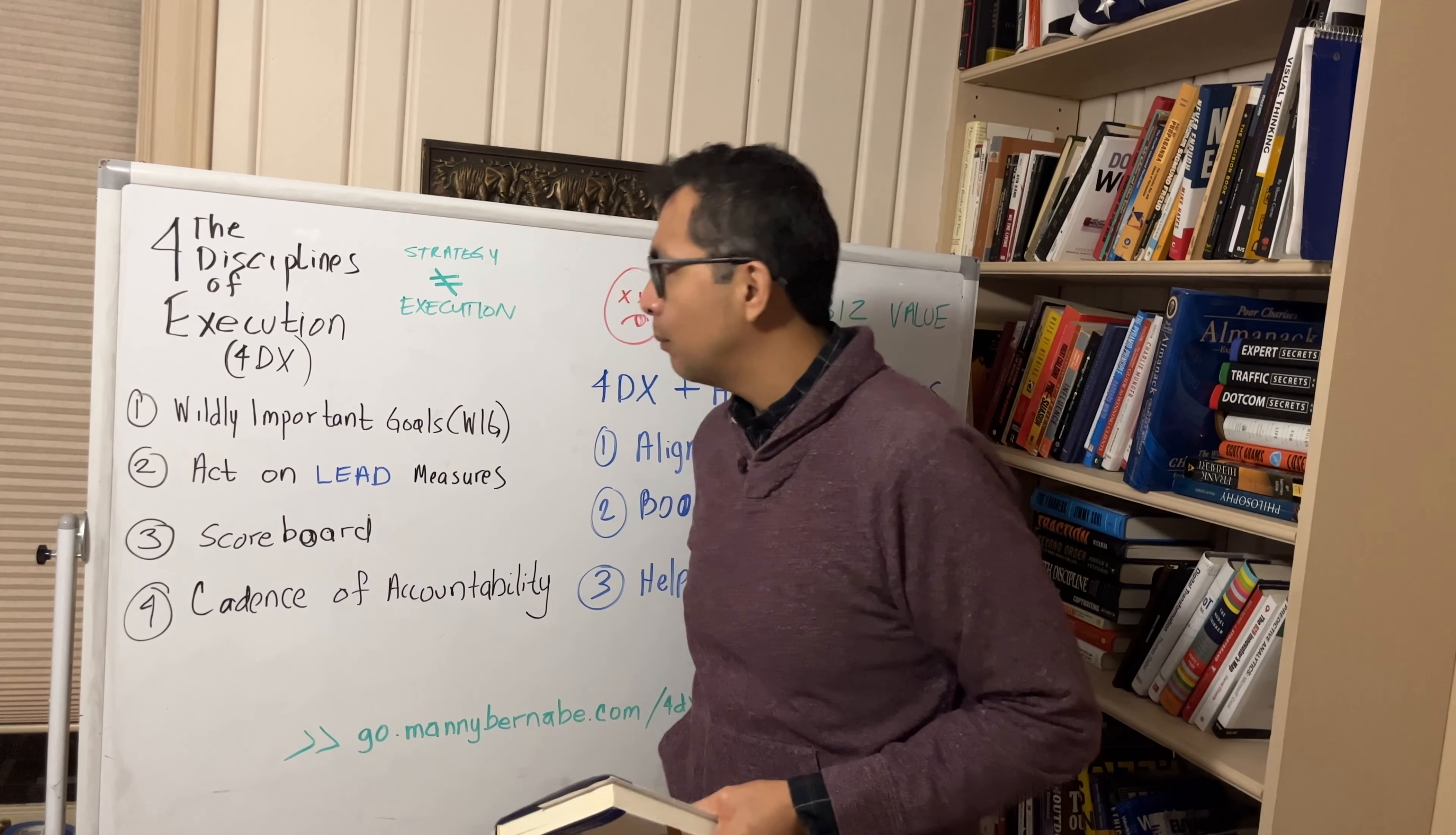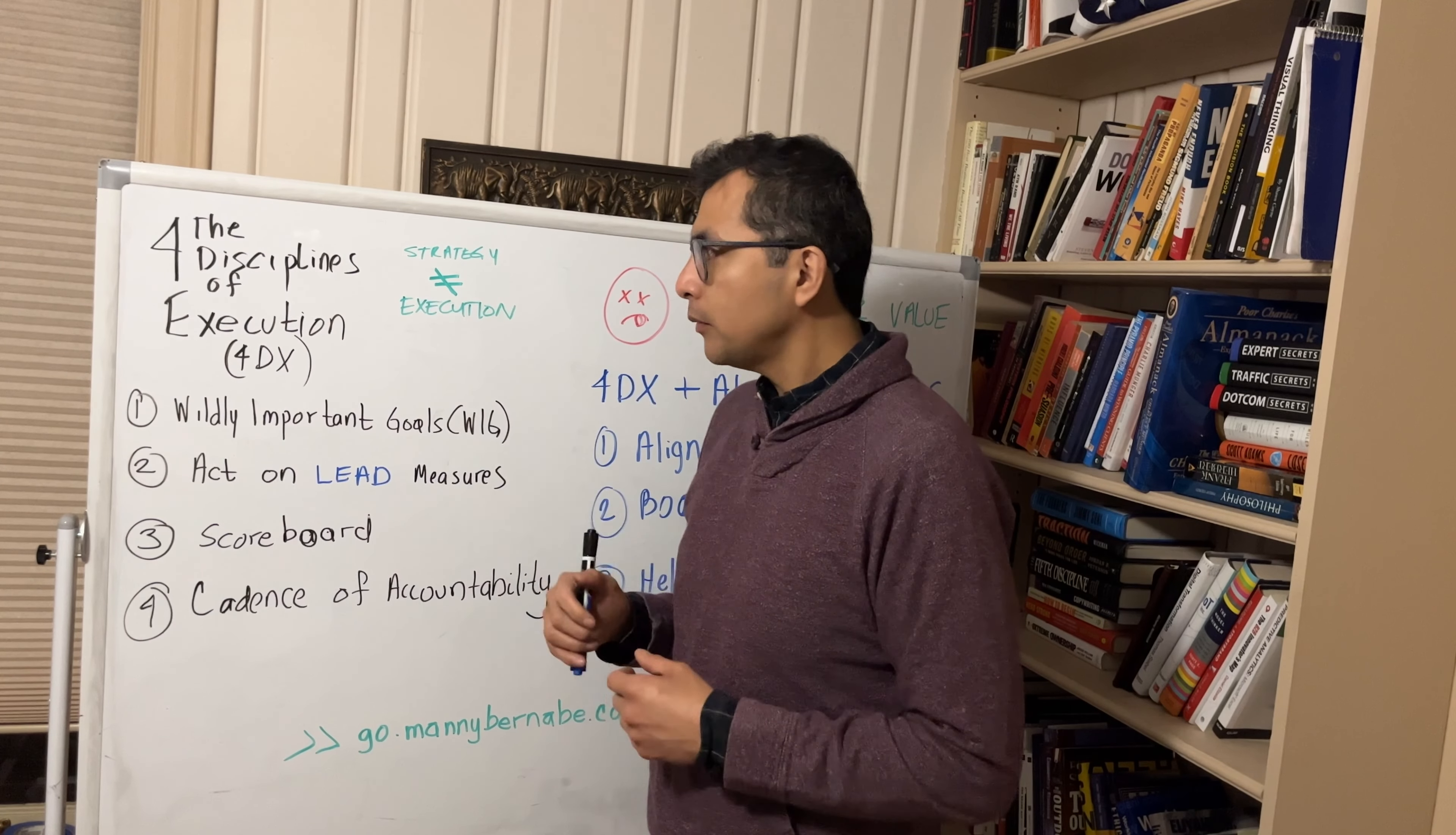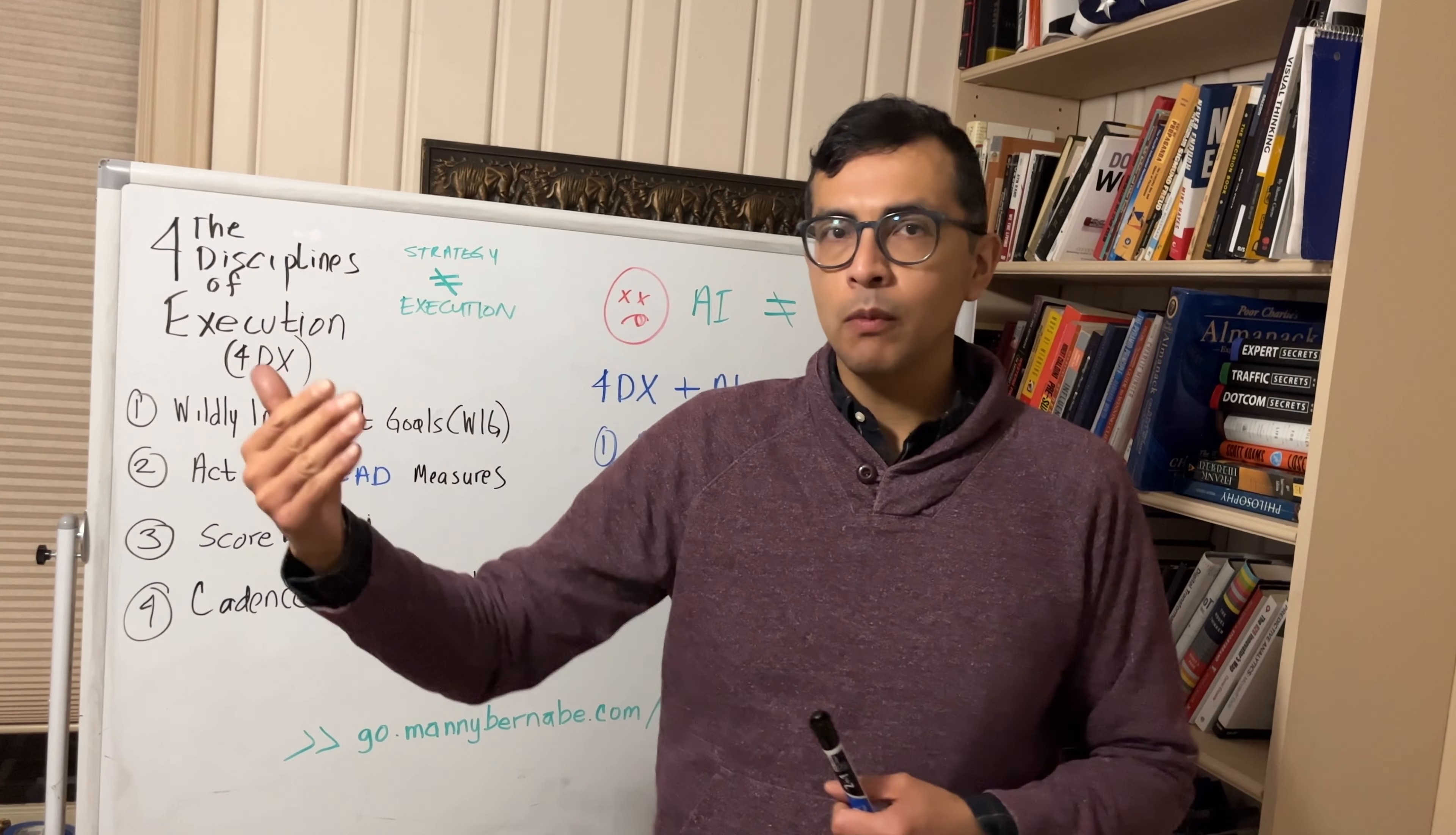The Four Disciplines of Execution or 4DX. Big overarching concept is that strategy does not equal execution. You go to business school, you go get an MBA, very heavy on the strategy. Then you go and put those concepts to work, and you don't get the results that you want, in part because it falls apart on the execution front. You need a new set of principles, disciplines, and guidelines to go from strategy to execution and getting the results that you want.